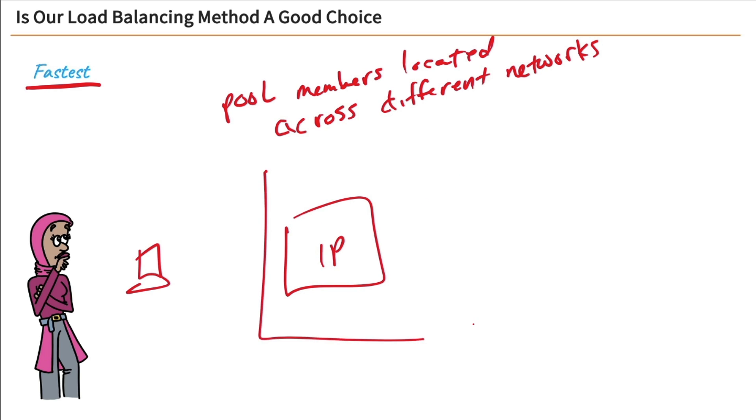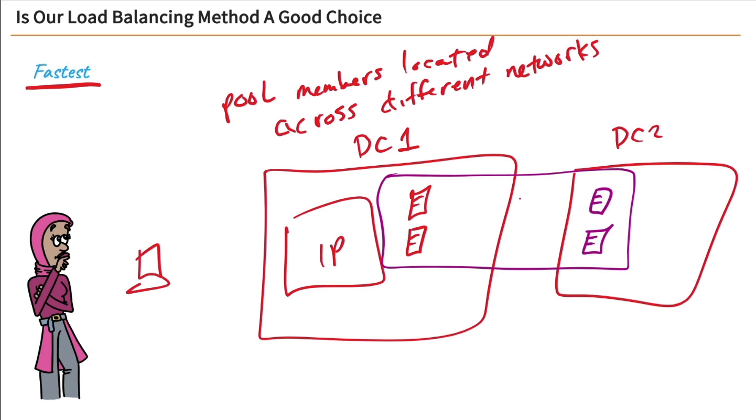Now the big IP could be, let's say in data center number one, and then over here we have data center number two. And I've got a pool member over here, let's say two pool members, and then I've also got two pool members over here. And again, these are in the same pool. We'll call this pool A.